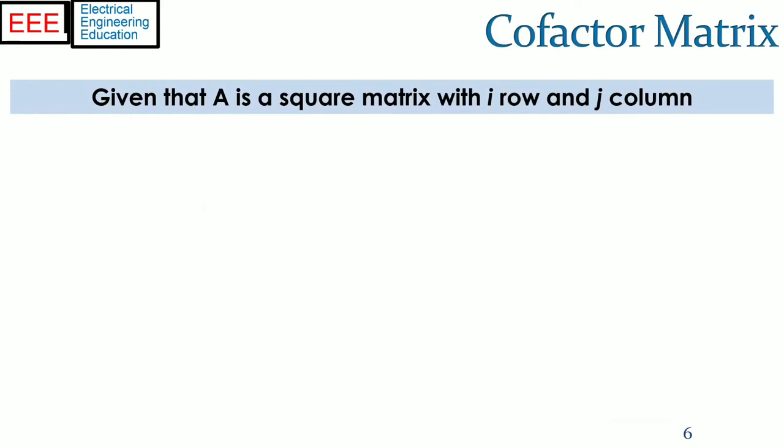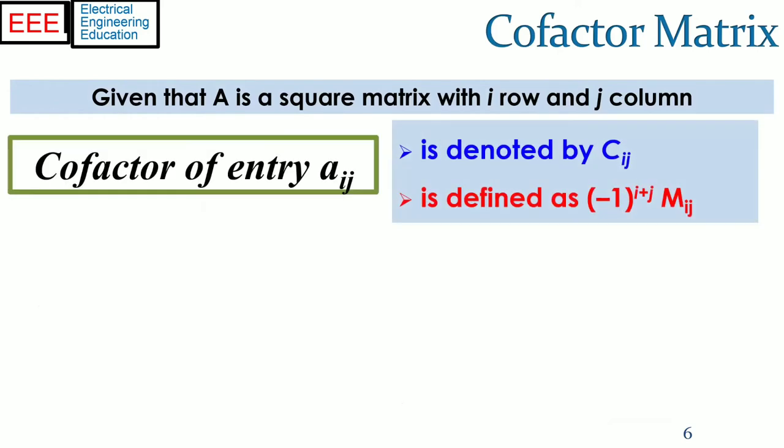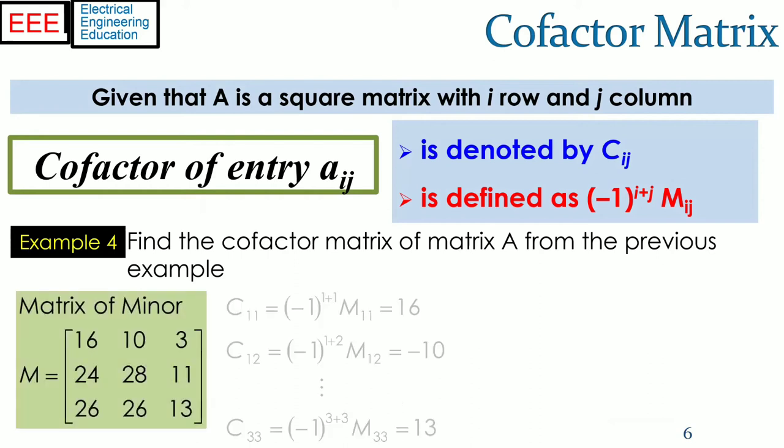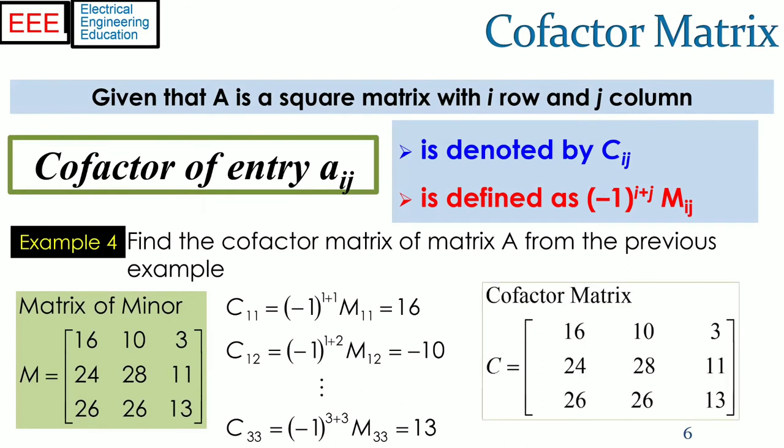Given that A is a square matrix with I-Row and J column as shown in the previous slide, the cofactor matrix is the minor matrix with the sign of each entry C_ij, which is obtained by minus 1 raised to the power of I plus J. The sign will be positive 1 if the sum of I and J is even, otherwise minus 1. Each element of the cofactor matrix is thus the minor element multiplied with 1 or minus 1 depending upon the row and column numbers.